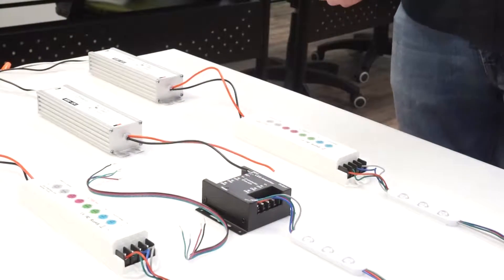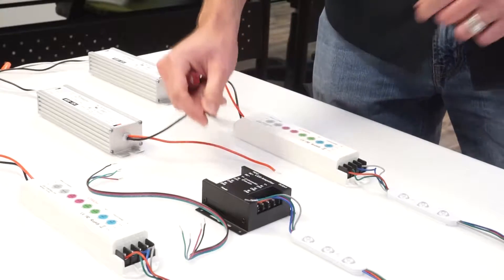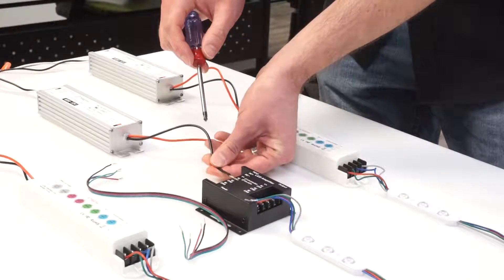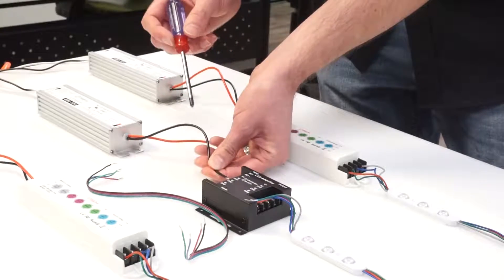Next step is you're going to come down to the amplifier and perform the exact same steps, taking your positive and negative from your power supply and inserting them into the DC plus and DC negative on the incoming side of the amplifier.